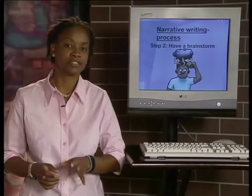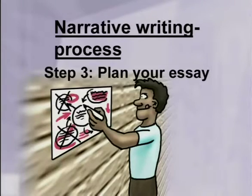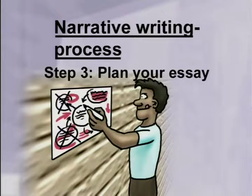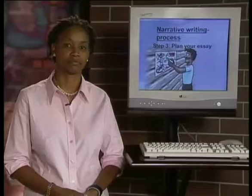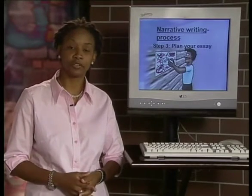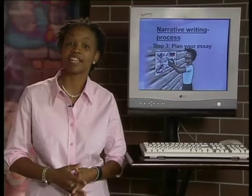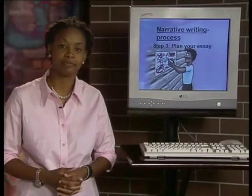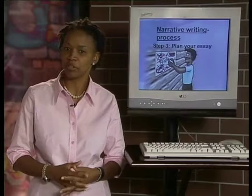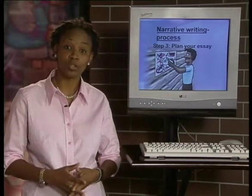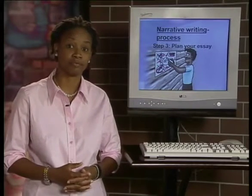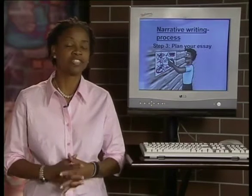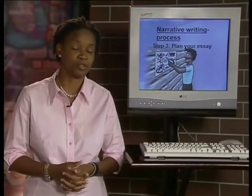Now once you've got all your ideas together, step three is to plan your essay. Planning involves deciding what key points you want to include and the order that they should logically follow. Some good ways of doing this include grouping ideas that go together by highlighting them in the same color. You can also number your ideas so you know the order they will follow in your essay. You also need to decide how you will start and end your essay.